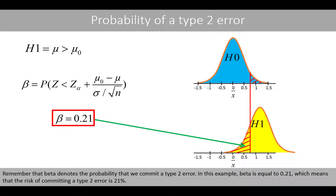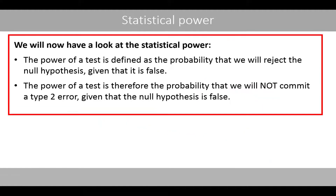Remember that beta denotes the probability that we commit a type 2 error. In this example, beta is equal to 0.21, which means that the risk of committing a type 2 error is 21%. We'll now have a look at the statistical power.